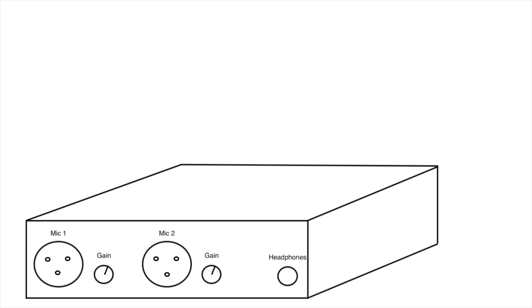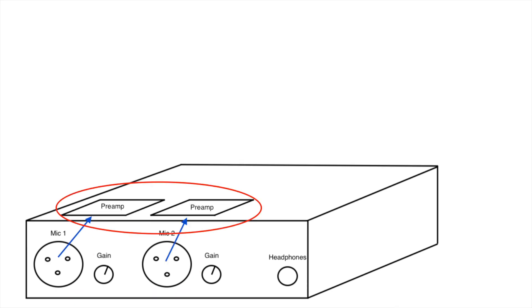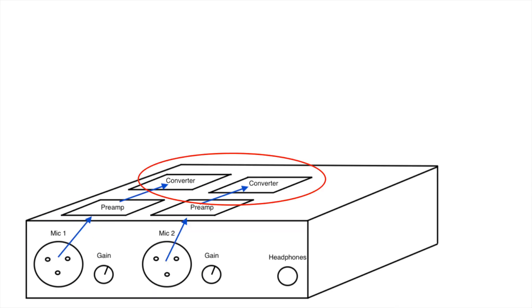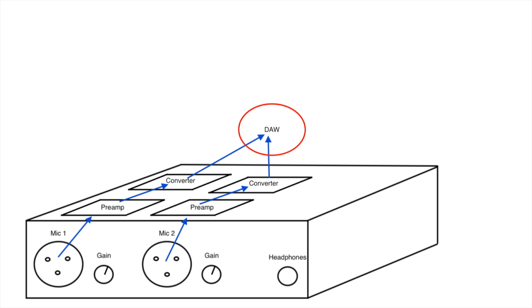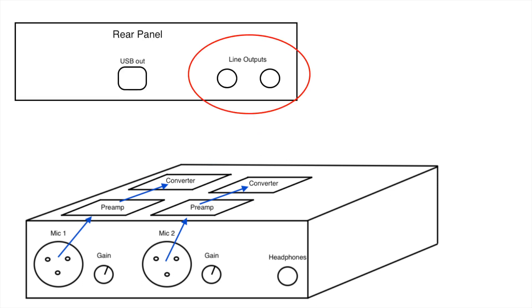So let's take a look at the layout of a very basic two-channel recording interface. You've got your two inputs, which go into preamps. From the preamps, it goes to the converters. From the converters, it goes into the computer. And then for outputs, it's got two line outputs to feed your monitors and a headphone output. This is a pretty common design and there's a lot of interfaces on the market that follow exactly this. And really for a lot of recordings, this is all you need.